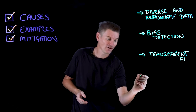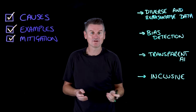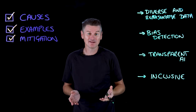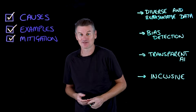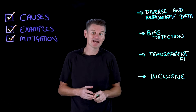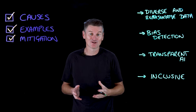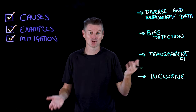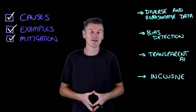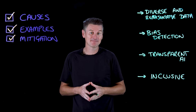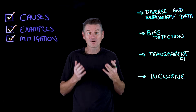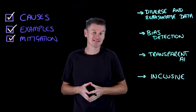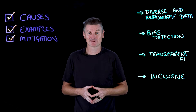Finally, we have inclusive AI — developing AI systems where the developers, data scientists, and machine learning engineers are varied racially, economically, by education level, by gender, by job description, and all sorts of other demographic metrics. This will bring different perspectives to help identify and mitigate biases that might otherwise go unnoticed.